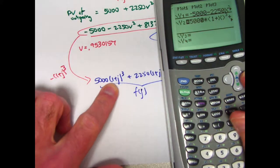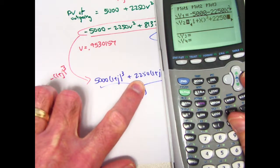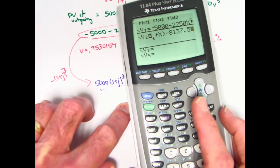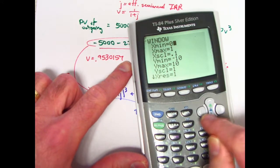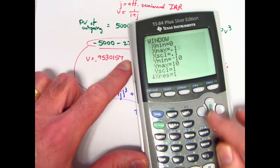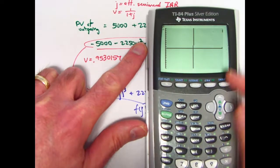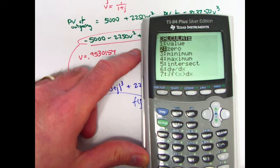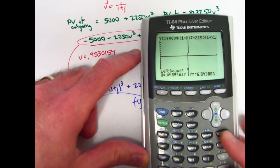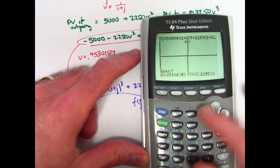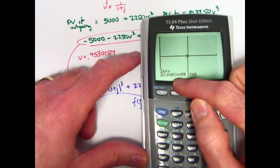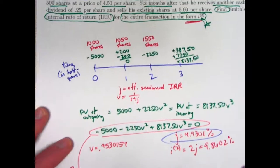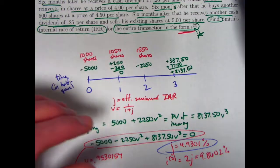Let's see if that happens on the graphing calculator. I've got 5,000 times (1 plus x) cubed plus 2,250 times (1 plus x) minus 8,137.50. Let's graph this with x going from 0 to 0.1. There we go—looks like the intercept is close to 0.05 as it should be. Let's calculate it: 0.049301, same thing—4.9301%. So this is the yield rate or internal rate of return (IRR) for this situation. Hope you got a lot out of that. Thank you.